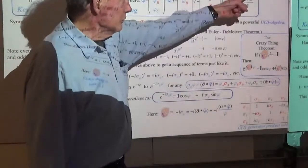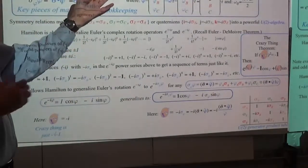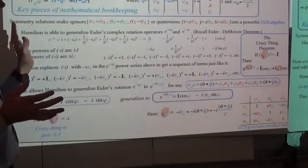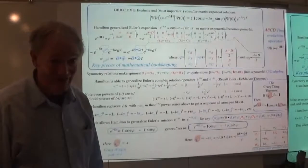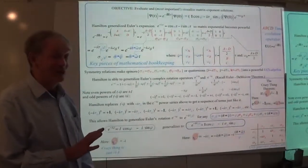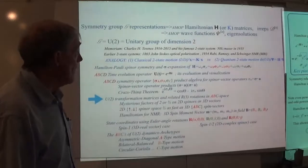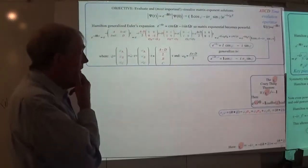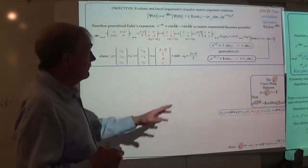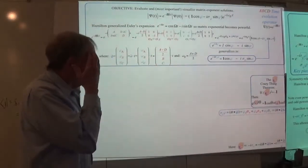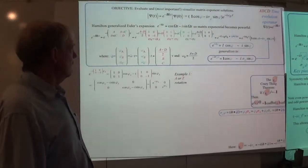So this is the situation with the crazy thing theorem: we can write our Hamiltonian very nicely as a cosine and sine of the parameter, whatever that parameter might be. Let's just use it to calculate a few things. What I'm telling you is that e to the minus this crazy thing should equal a cosine of the parameter multiplied by one, then the crazy thing — that's minus i times this matrix, sigma-A — times sine.